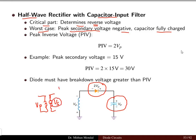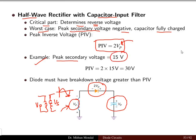This secondary voltage is an AC waveform, so when the AC goes negative, the maximum negative voltage that the diode has to withstand — let us take the example of VP. If we take the reverse voltage as VP, then the diode has to withstand a peak inverse voltage of twice the secondary peak voltage, that is 2VP. If the peak secondary voltage is, for example, 15V, then the peak inverse voltage will be twice that, which is 30V. The diode must have a breakdown voltage greater than the peak inverse voltage, so in this case the diode must have a breakdown voltage greater than 30V.